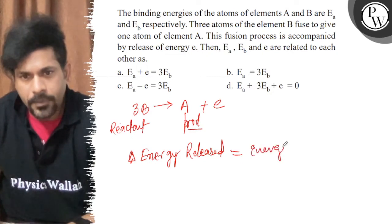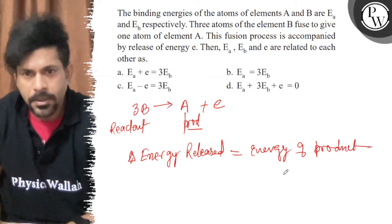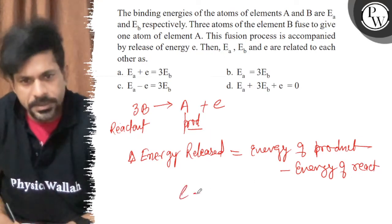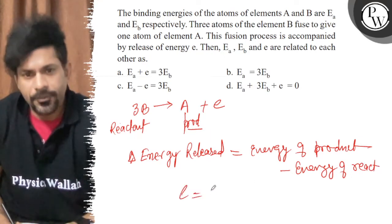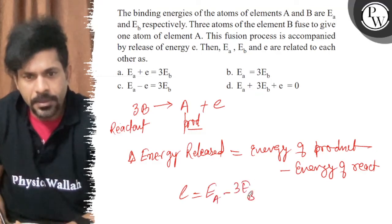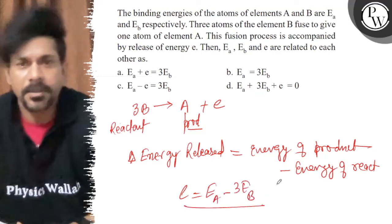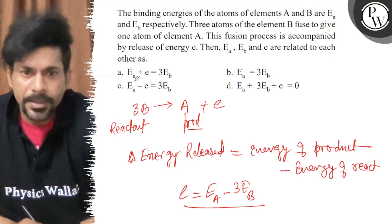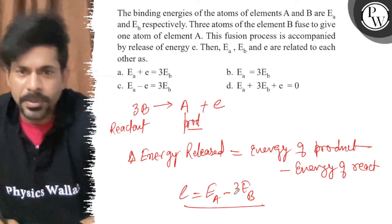Energy of product minus energy of reactant. So that is: e equals energy of product Ea minus energy of reactant 3Eb. That should be the relation between them, so e plus 3Eb...